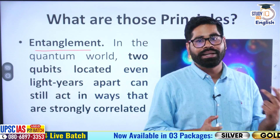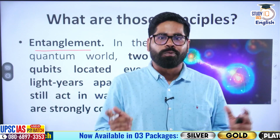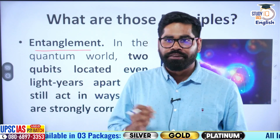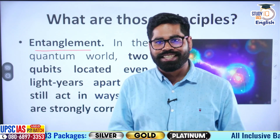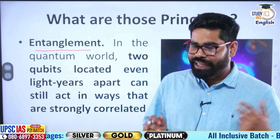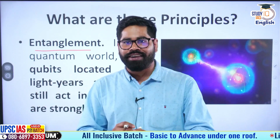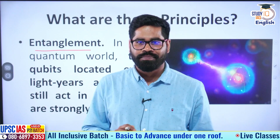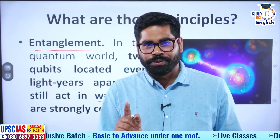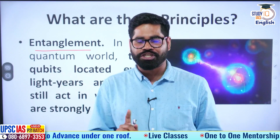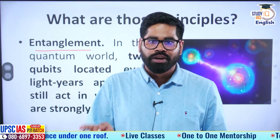What does quantum entanglement mean? Basically, in quantum mechanics, it is said that if two qubits are there, and even if they are separated from each other by light years, they can still act in such a manner that they are correlated. So two particles which are even light years away from each other can behave as if they are correlated with each other.